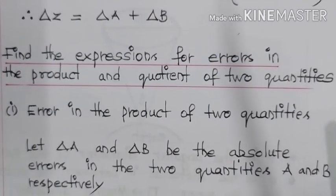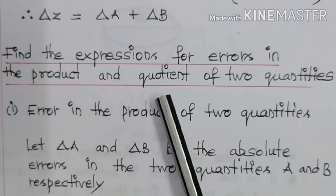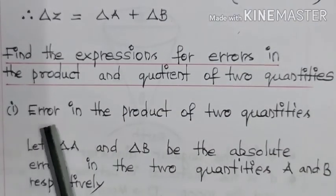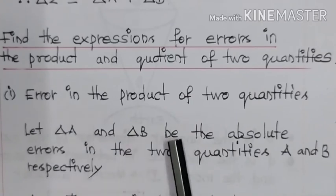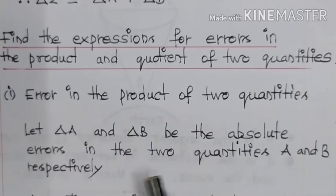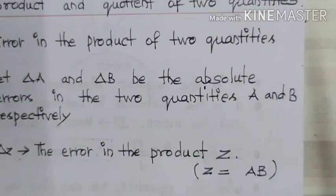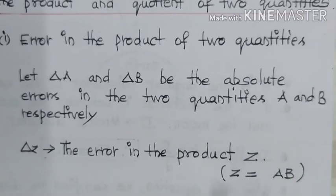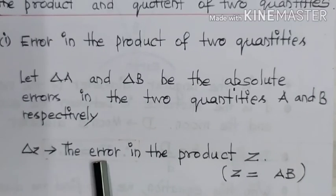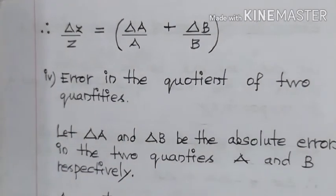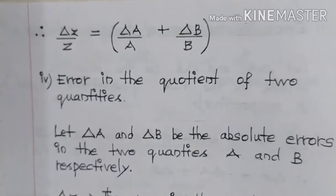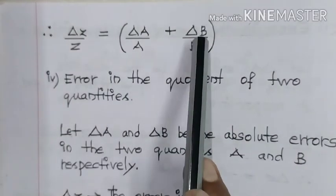Find the expressions for errors in the product and quotient of two quantities. First, error in the product of two quantities. Let delta A and delta B be the absolute errors in the two quantities A and B respectively. Here Z is the product of A and B, and delta Z is the error in the product Z. The expression is: delta Z by Z is equal to delta A by A plus delta B by B.